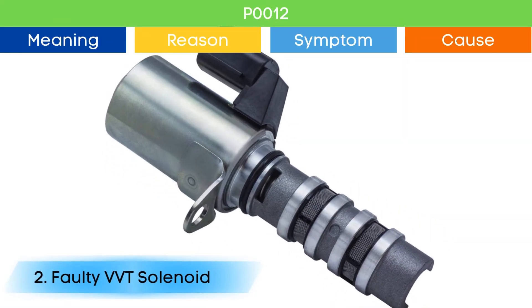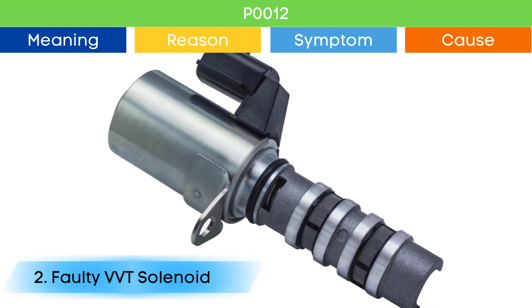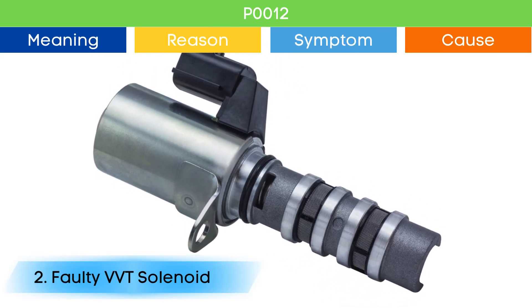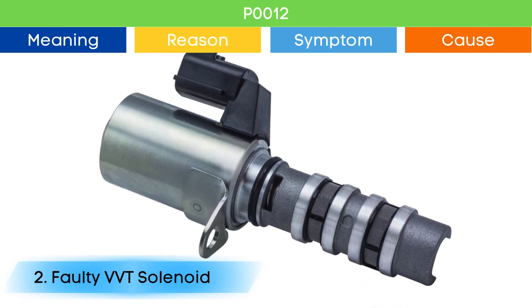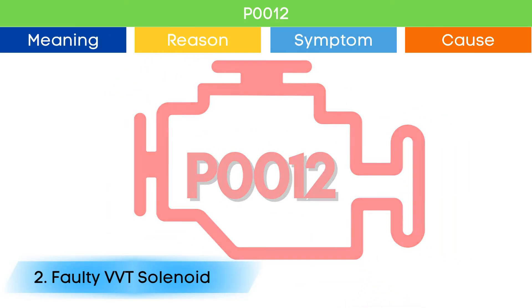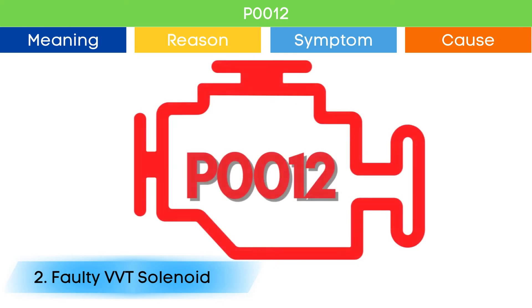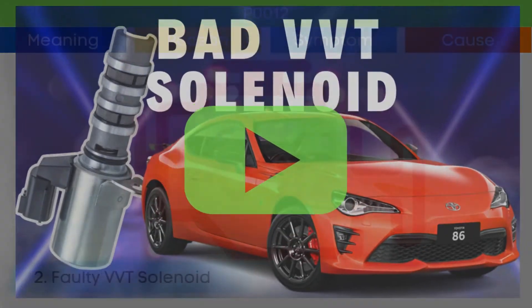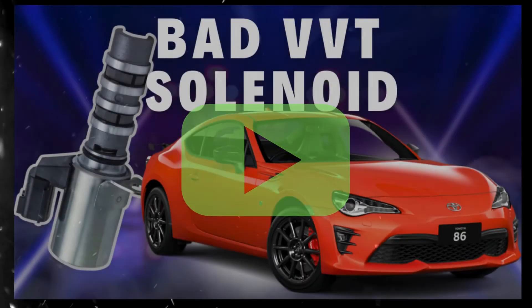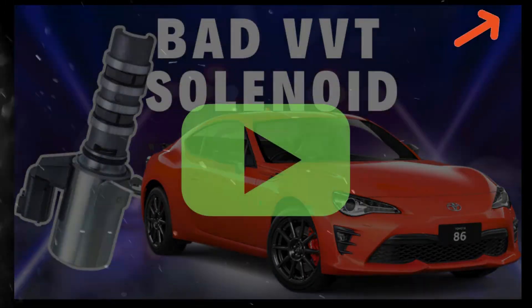Cause number two: bad VVT solenoid. Due to a bad VVT solenoid, the camshaft position advance and delay may not work properly, which may trigger P0012 and other OBD-II codes related to the VVT solenoid, along with symptoms of a bad VVT solenoid. Check our detailed video to learn more about the symptoms of a bad VVT solenoid and related OBD-II codes — link in the corner.